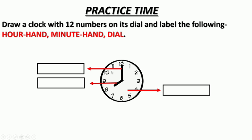So, this is minute hand, to yahan pe aap minute hand write karoge. Yeh short hai, so yeh hour hand hoga. Yahan pe aap hour hand write karoge. Aur, clock ki face ko hum dial kehte hai. To yahan pe dial write karoge.